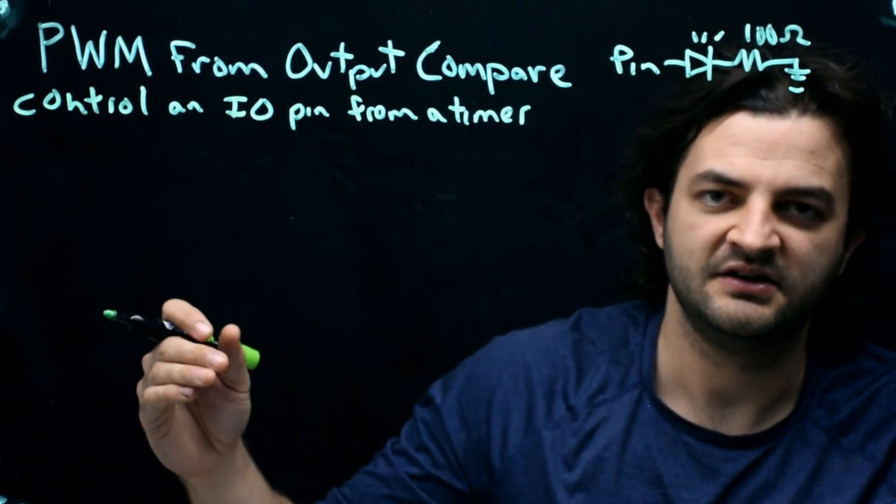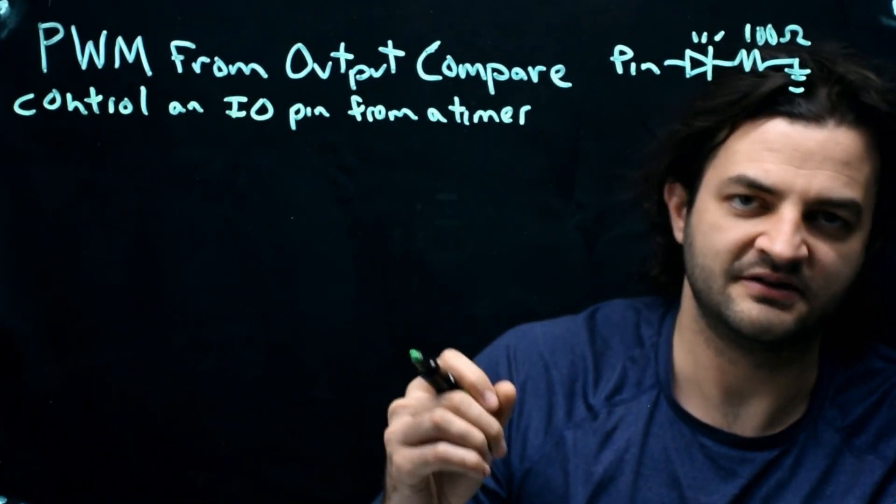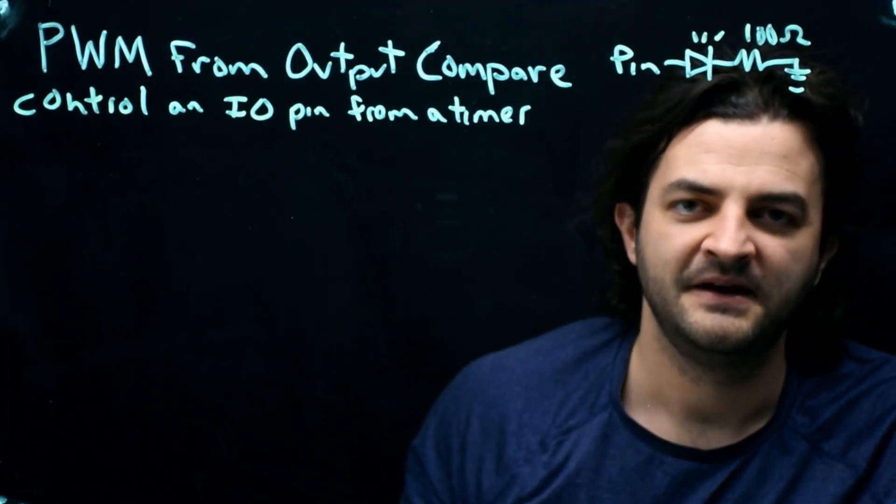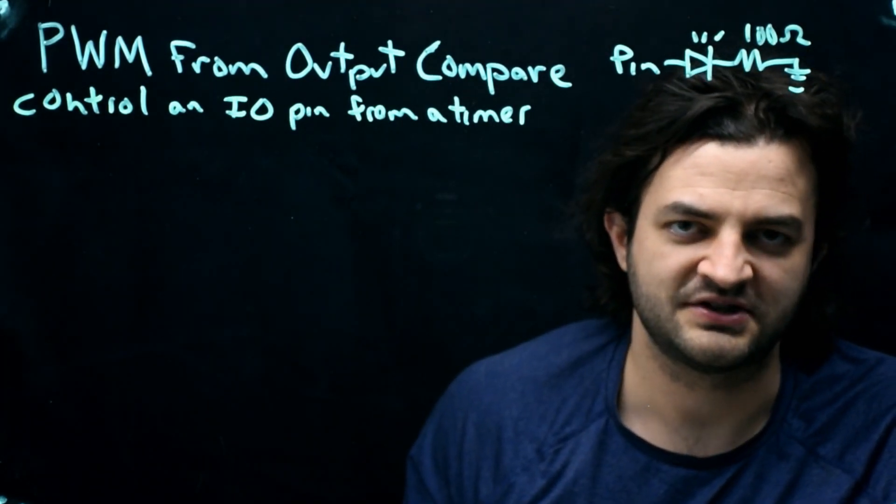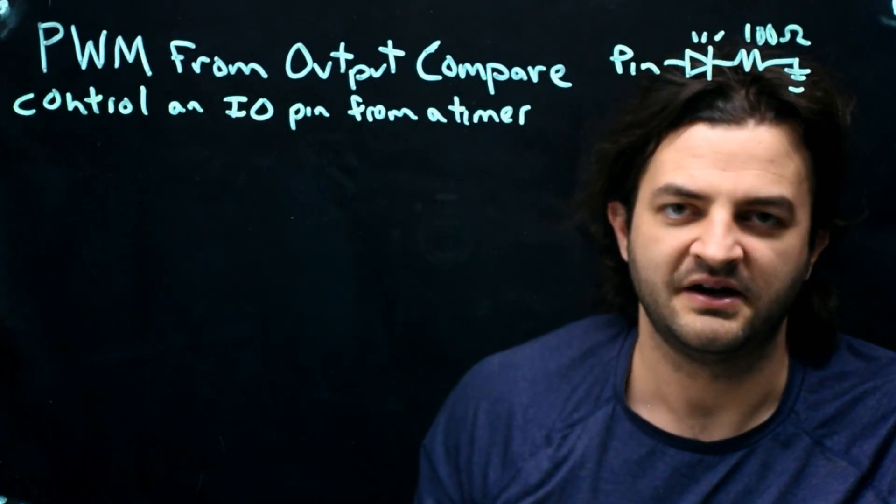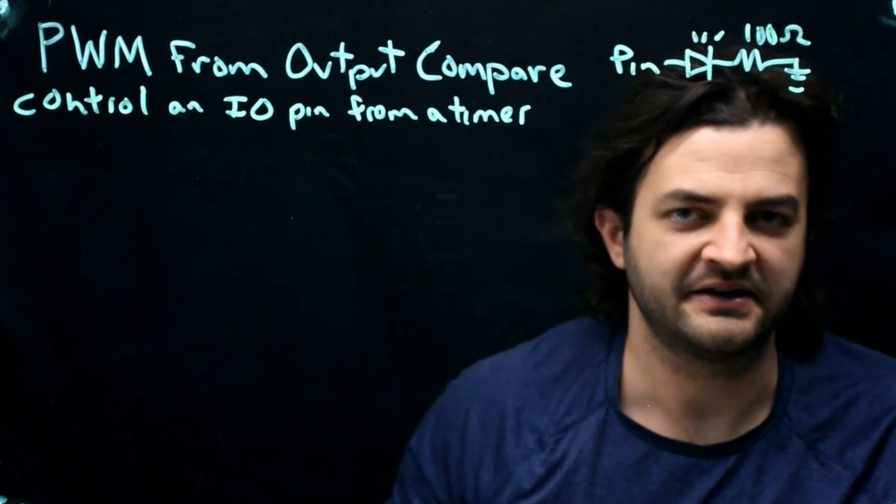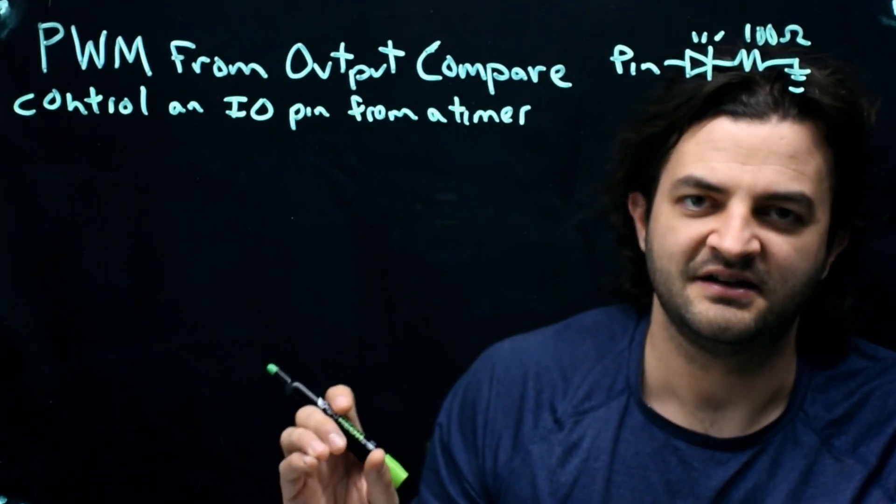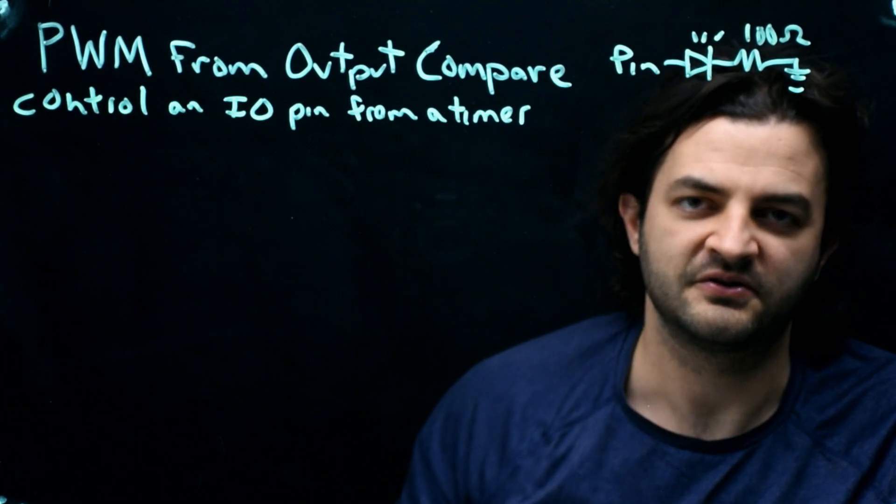So we could say turn the pin on, do a delay, turn the pin off, do a delay, turn the pin on, do a delay, turn the pin off, do a delay, in some kind of for loop. But if we have other code to do, like check whether we're doing serial communication or setting the brightness of other LEDs, that gets pretty complicated because we have to manage keeping a constant blinking going on while doing these other tasks.